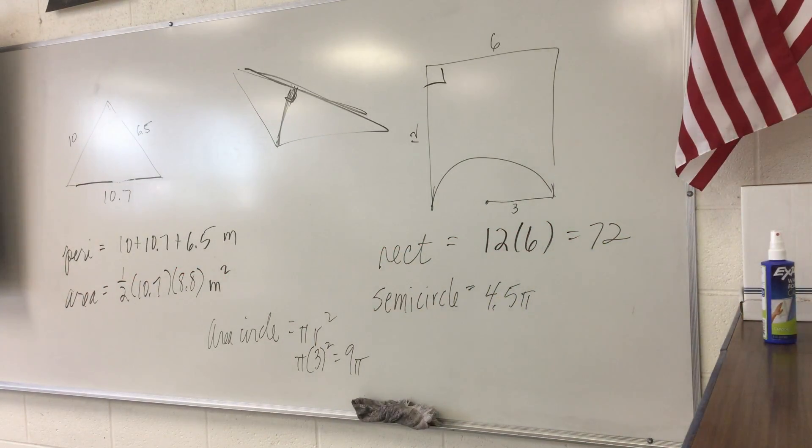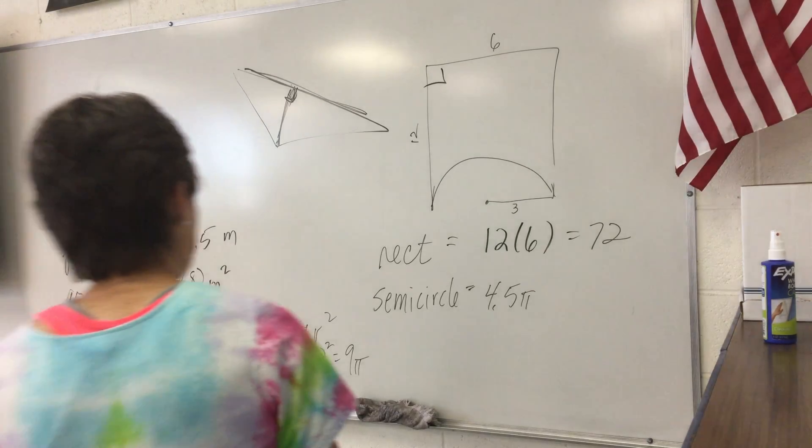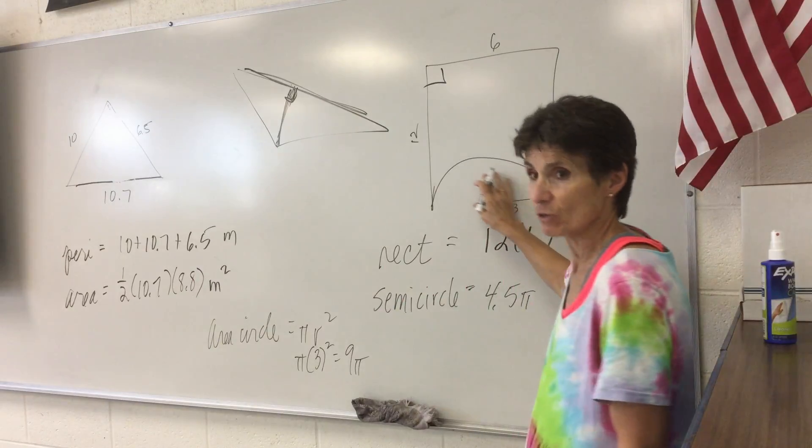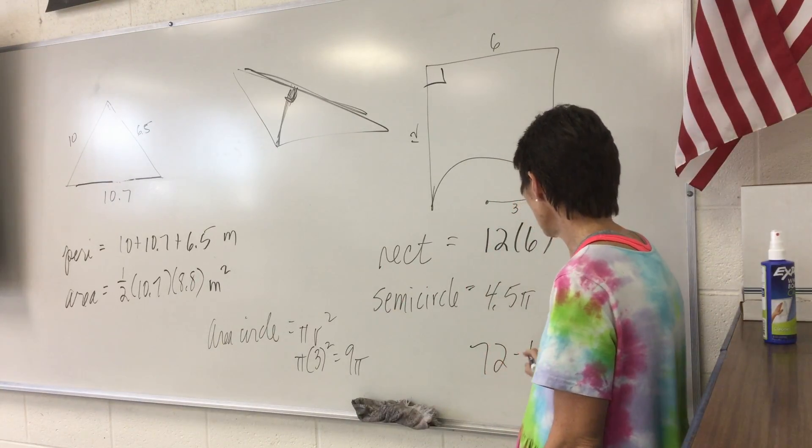Now, here was Sue's original question. Does the order I subtract matter? And the answer is yes, it does. You have to take the shaded shape minus the cutout. So, the shaded shape is the rectangle. And the cutout, take it out, subtract it out, is the semicircle. You want to take out the semicircle, right? So, it's going to be subtracted. So, this is your answer.